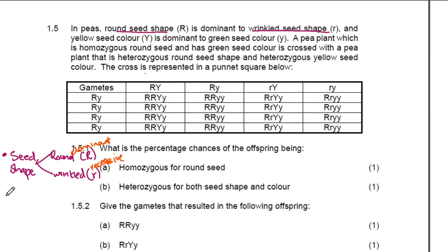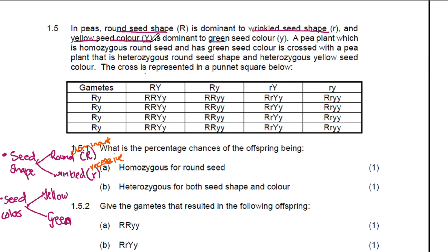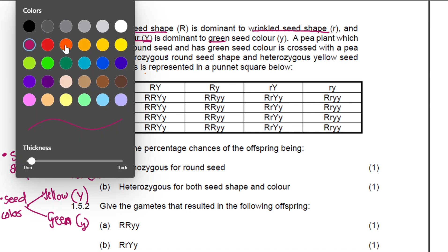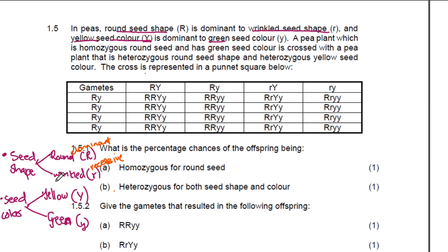Now the second trait that we have here is the seed color. The alleles given here are yellow and green. In terms of which one is dominant and which one is recessive: the yellow seed color has been given the capital letter W, and the green color has received small letter W, meaning it's recessive. So yellow is the dominant gene and green is the recessive gene.